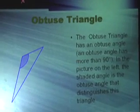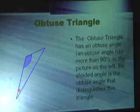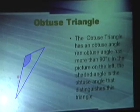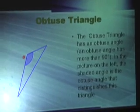An obtuse triangle is a triangle with one angle that is greater than 90 degrees.